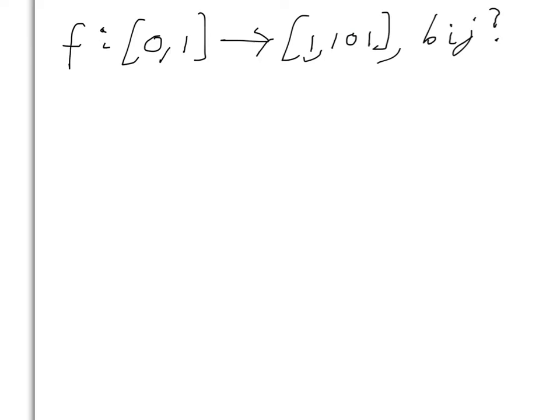So let's see if we can write a formal proof that these two sets have the same cardinality. We have to begin by coming up with a conjecture as to what is a bijection from [0,1] to [1,101]. Can we come up with such a thing?